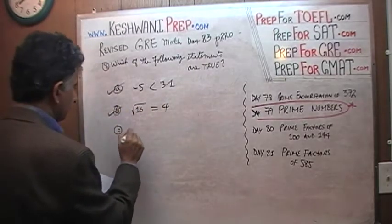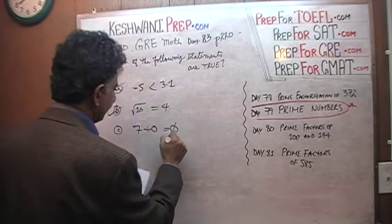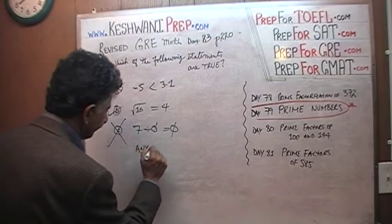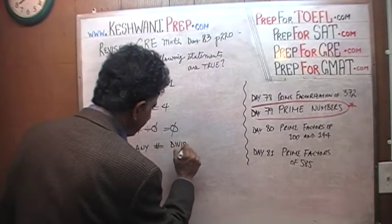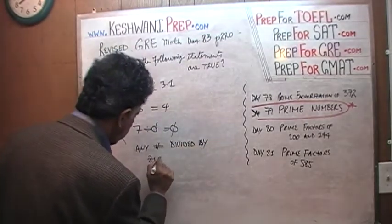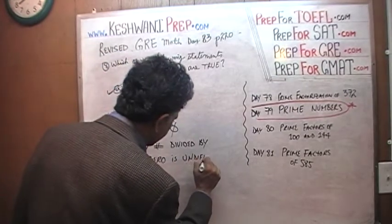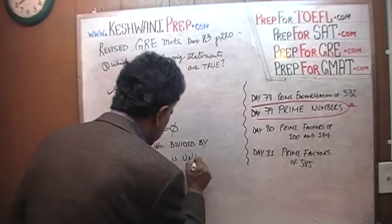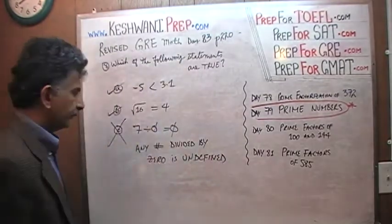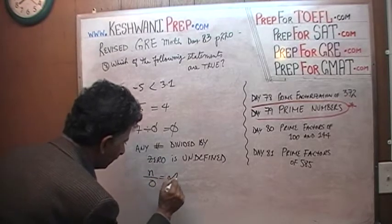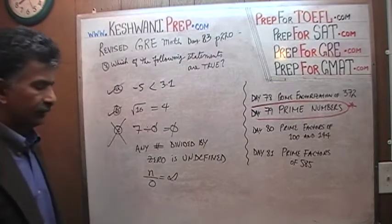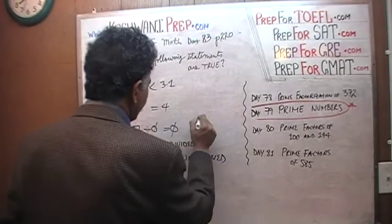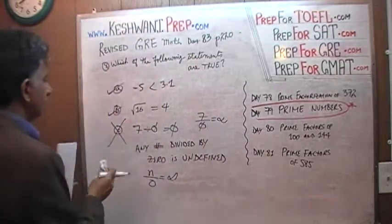Statement C tells us that 7 divided by 0 equals 0. Now, that's a tricky one. That is not true. Any number — it doesn't matter what number it is — divided by 0 is undefined. Some might say m divided by 0 equals infinity, but it is undefined. 7 divided by 0 does not equal 0; it is undefined.